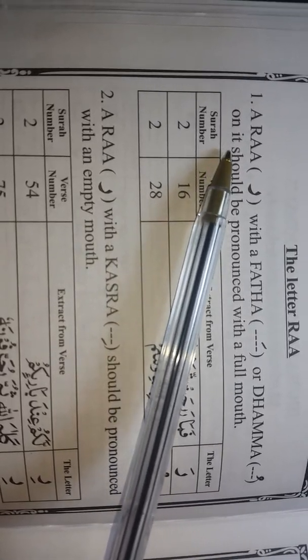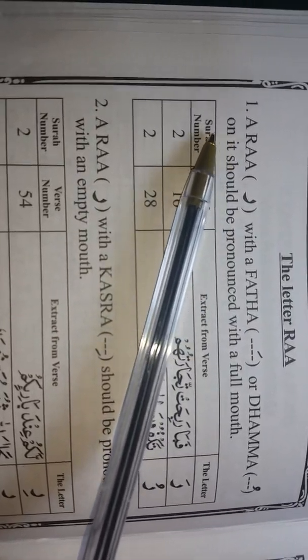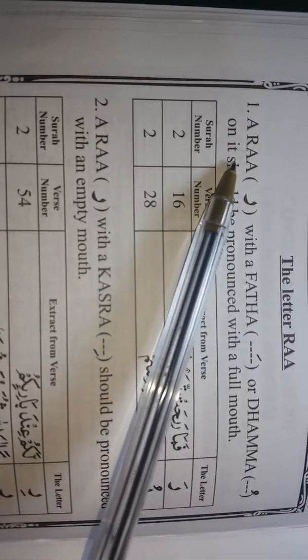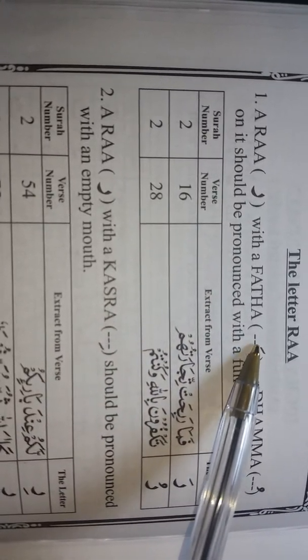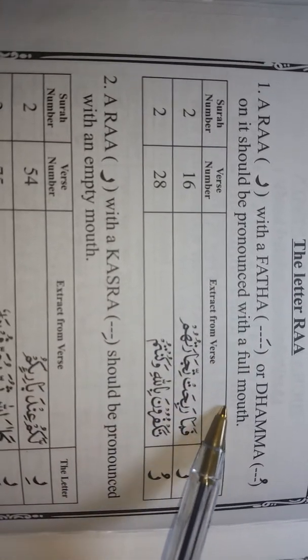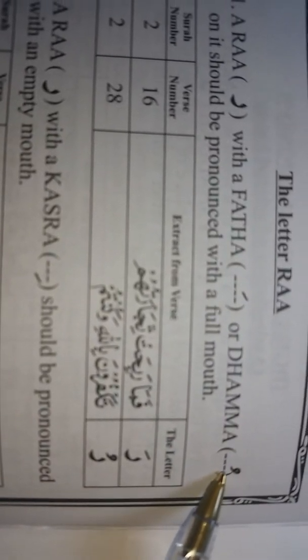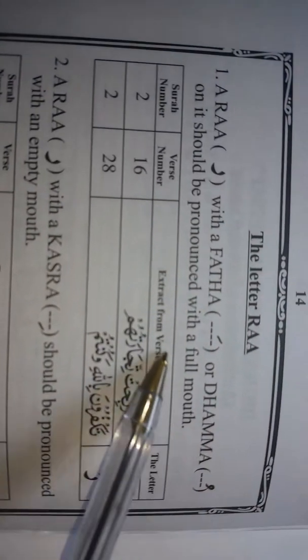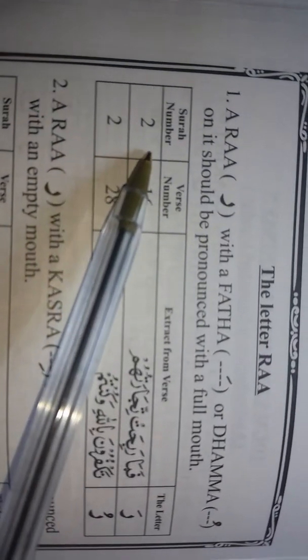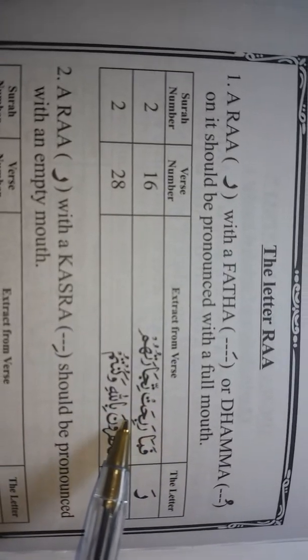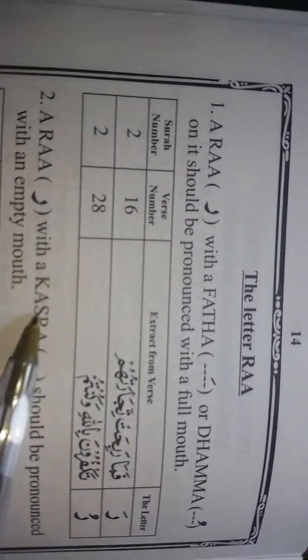Bismillahirrahmanirrahim. Number one is Ra. So we pronounce it Ra. With Fatha — with a line on top — or Dhamma, which looks like number nine on top of it, it should be pronounced with a full mouth. That's why we say Ra. It's not Ra, but Ra.